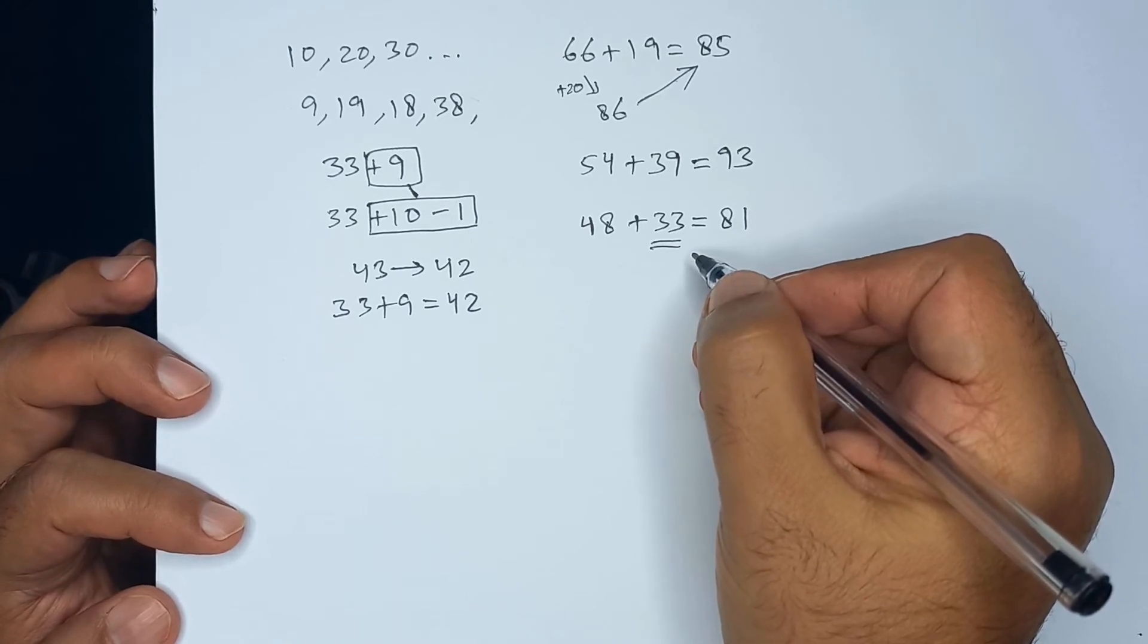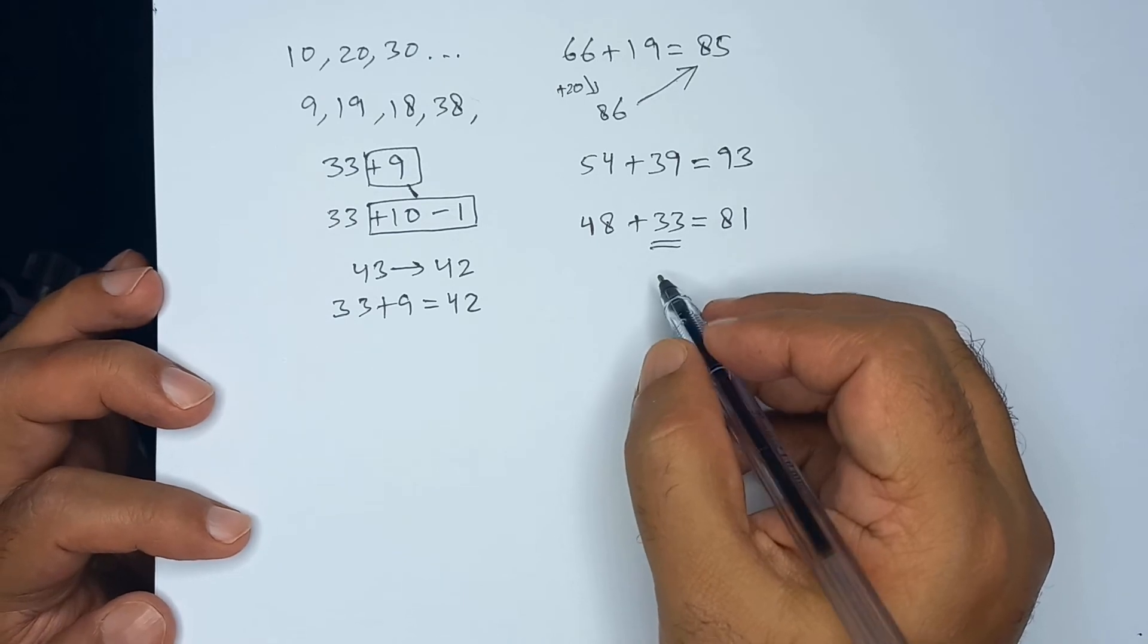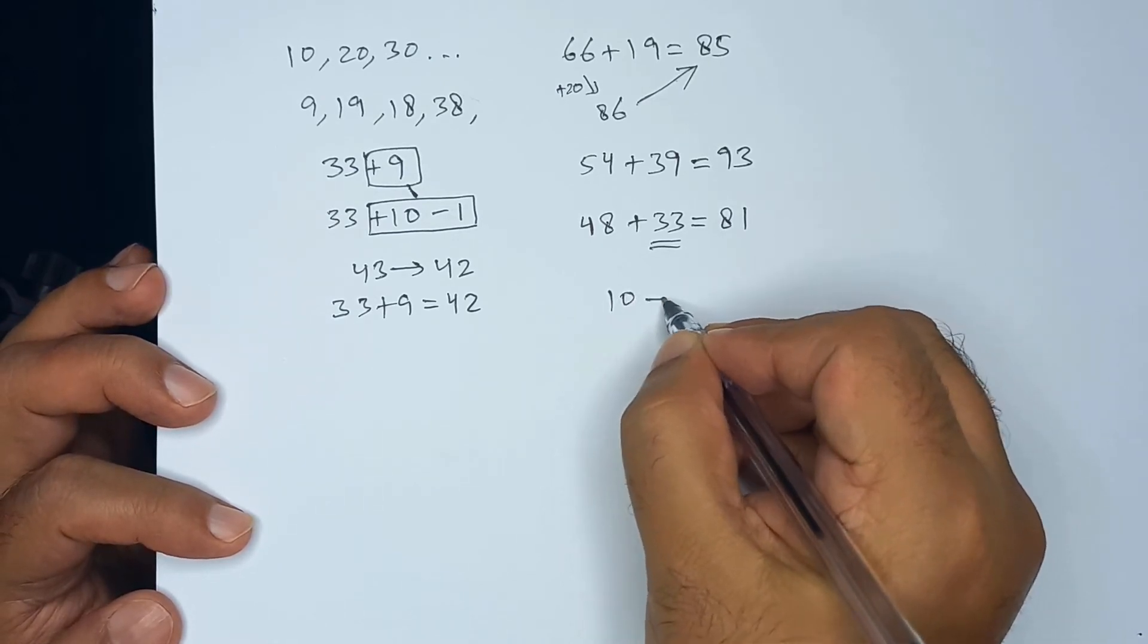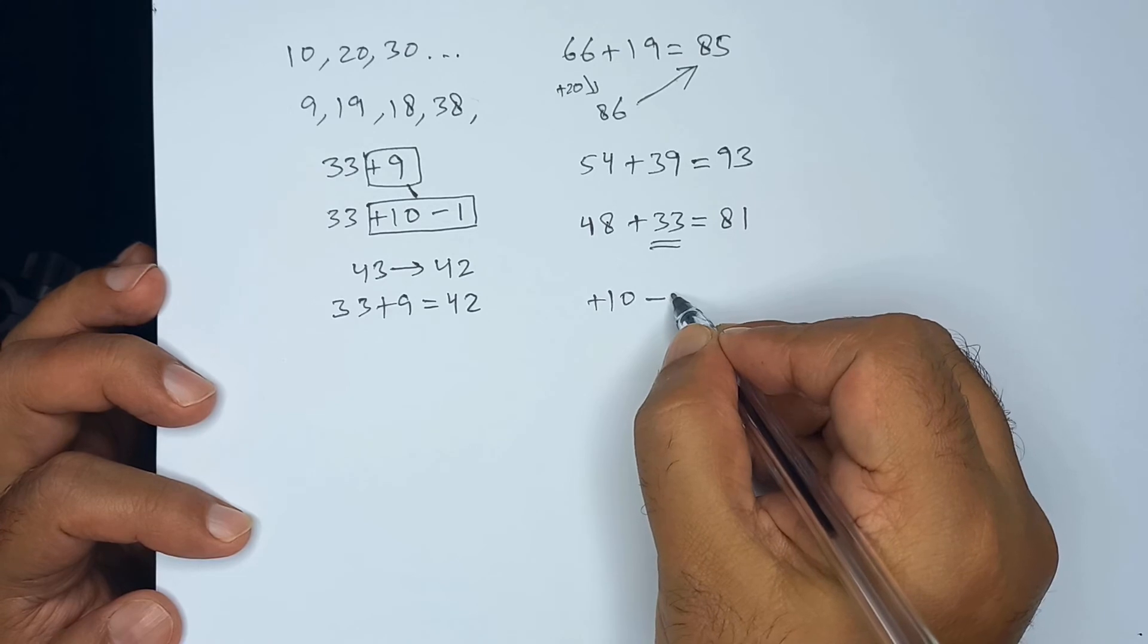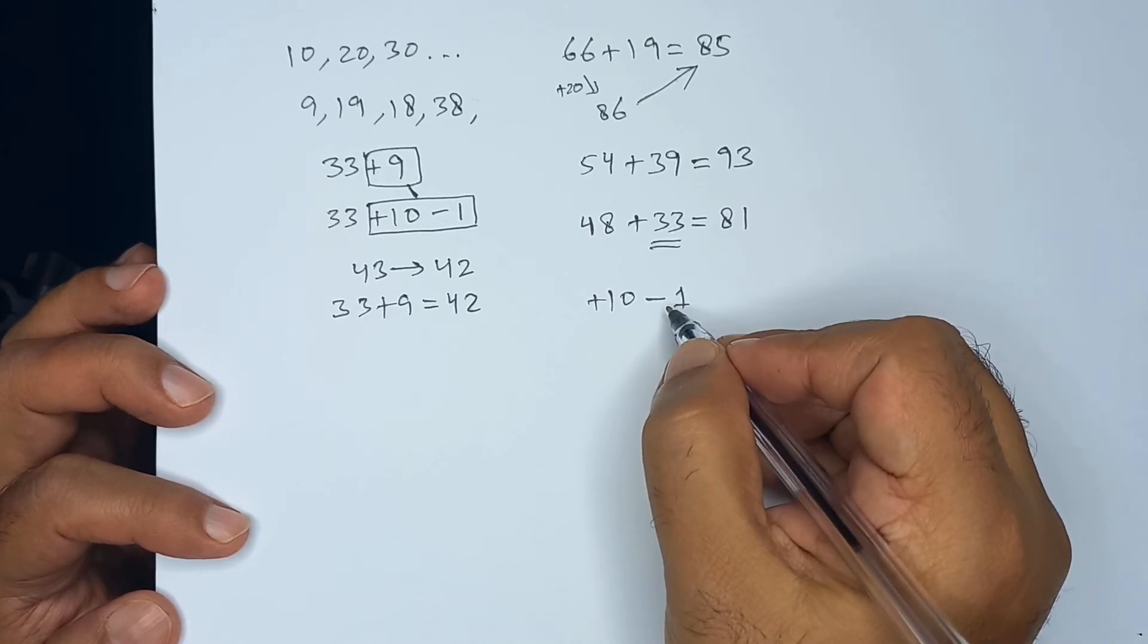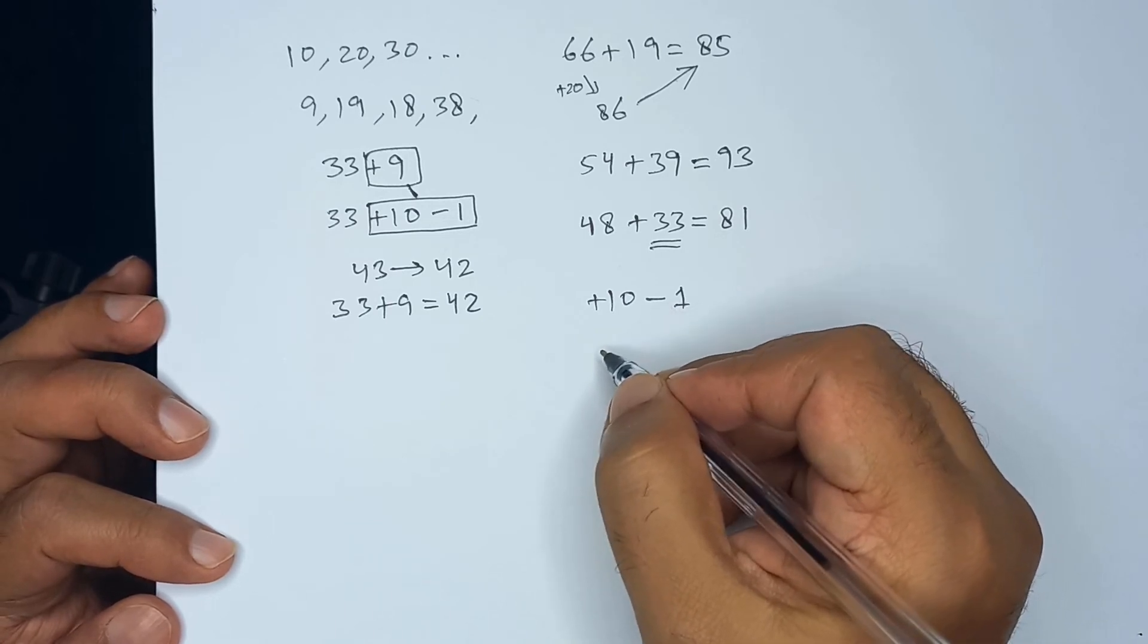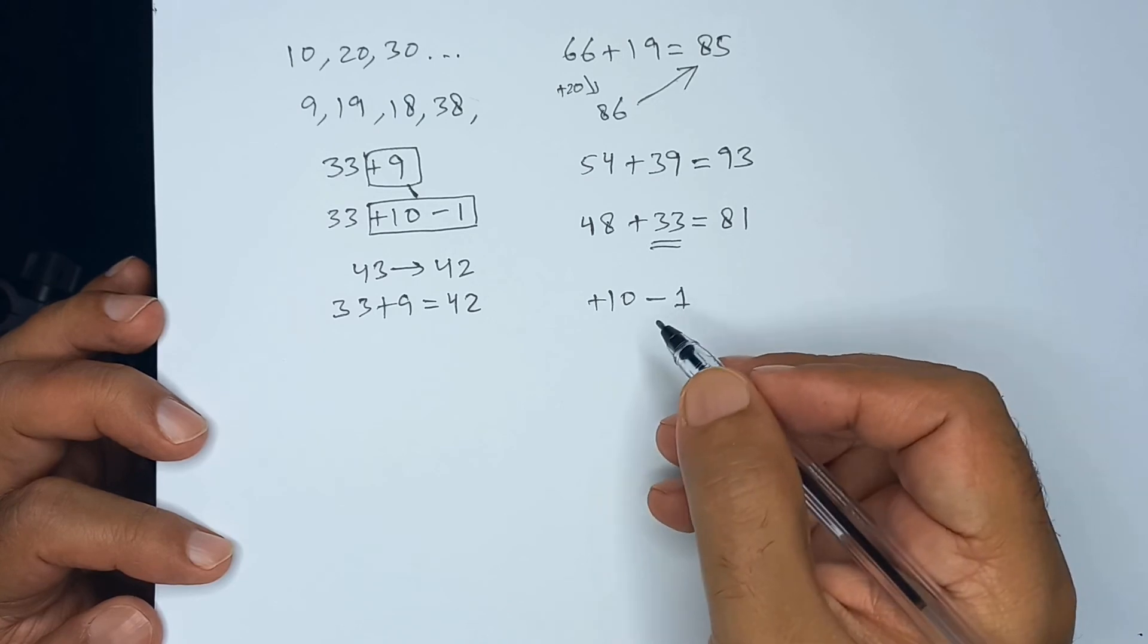Now, main points of this lesson are, we can add 9 by adding 10 and taking 1 away. And similarly, we can add by adding 40 and taking 3 off.